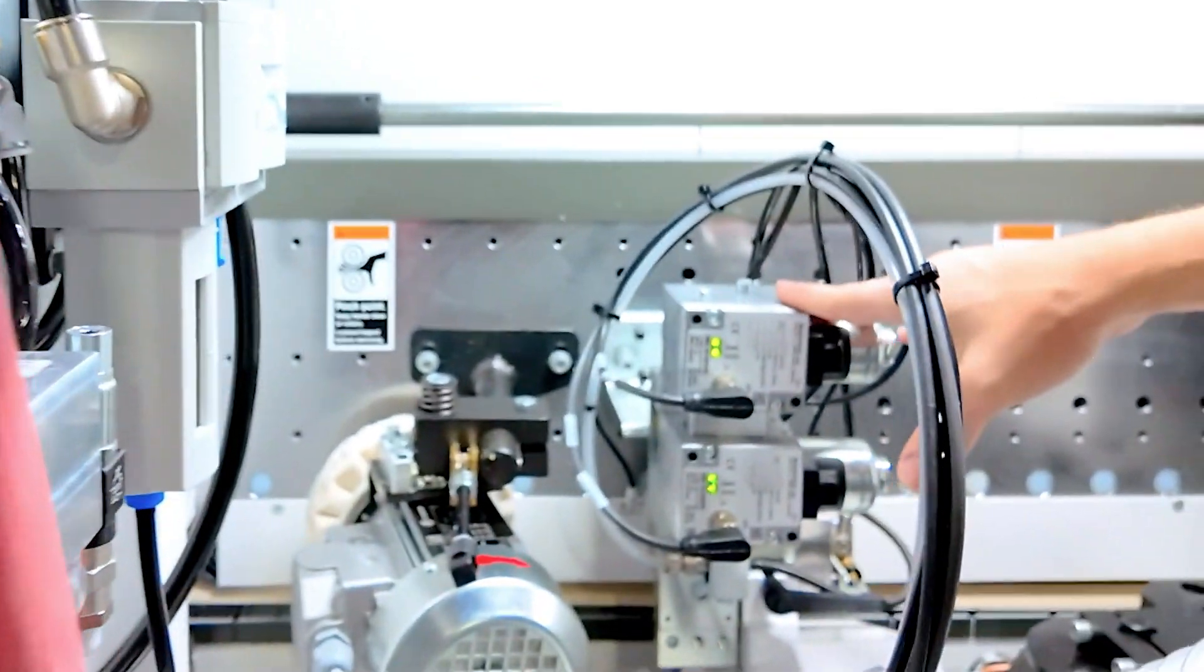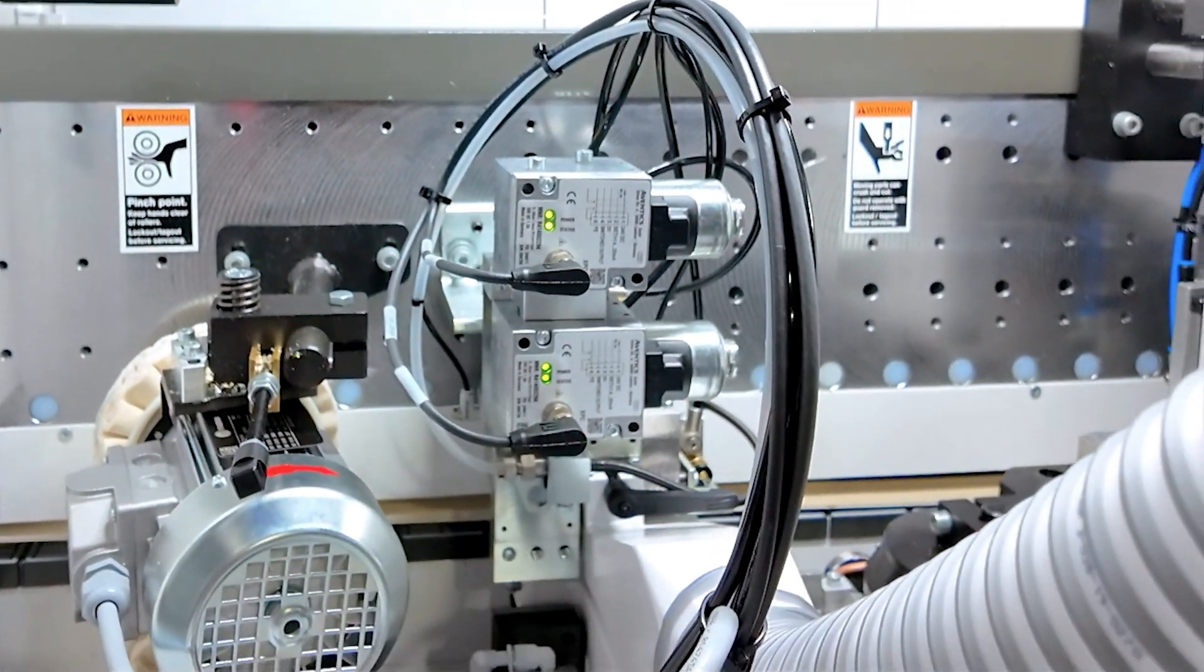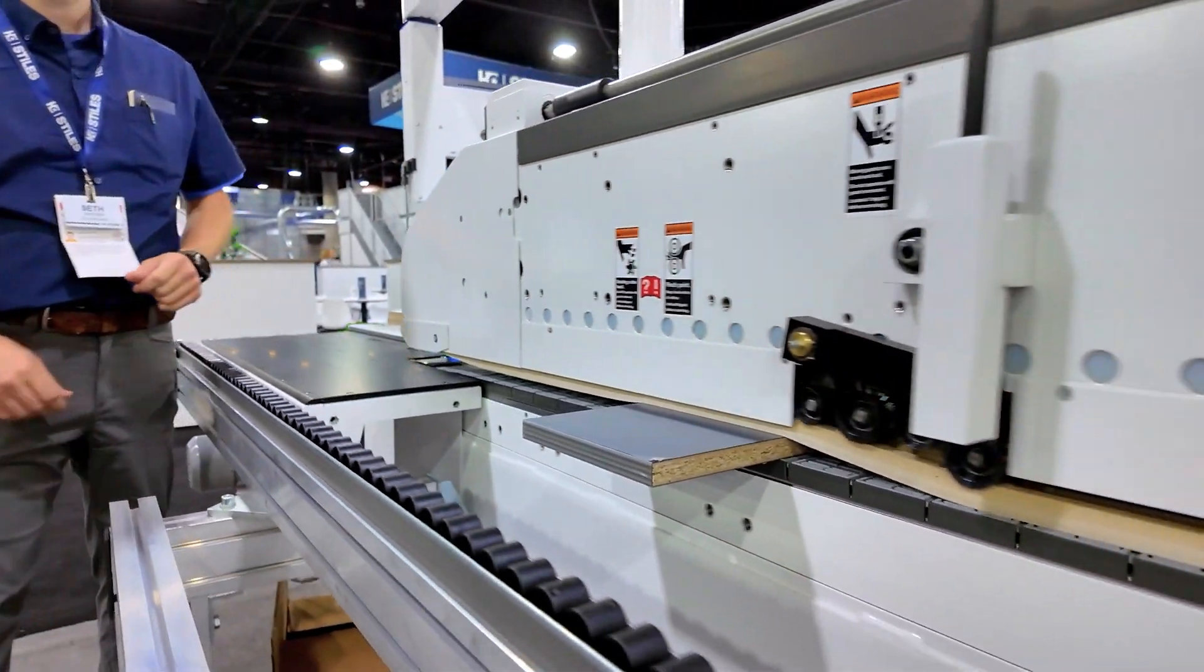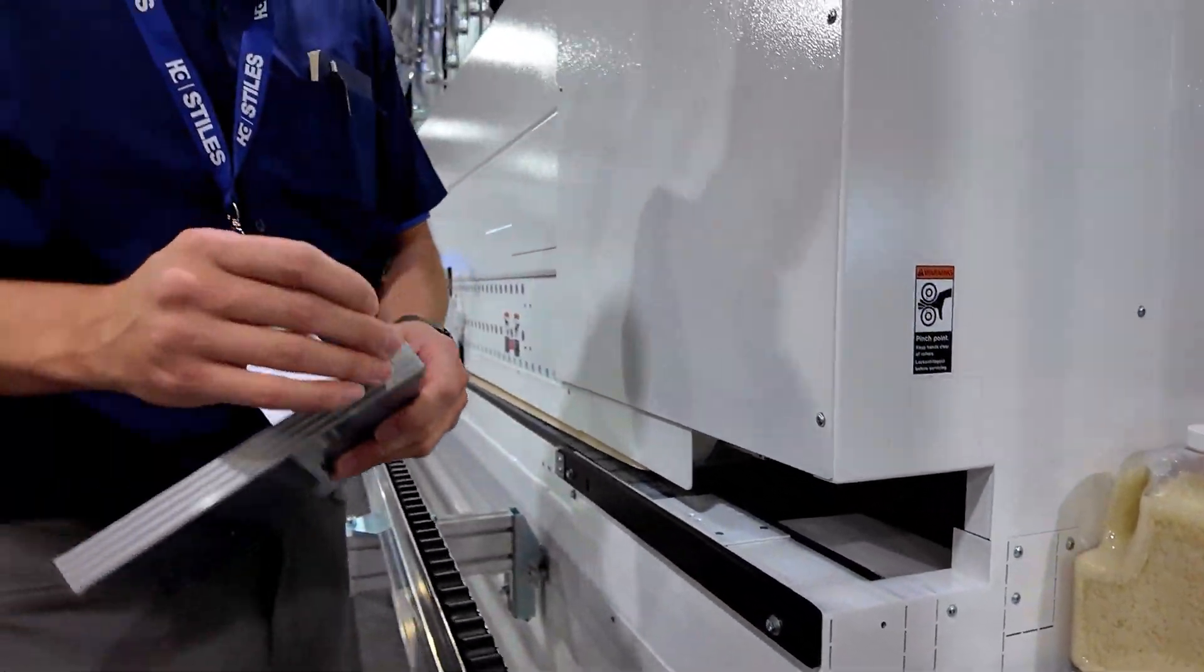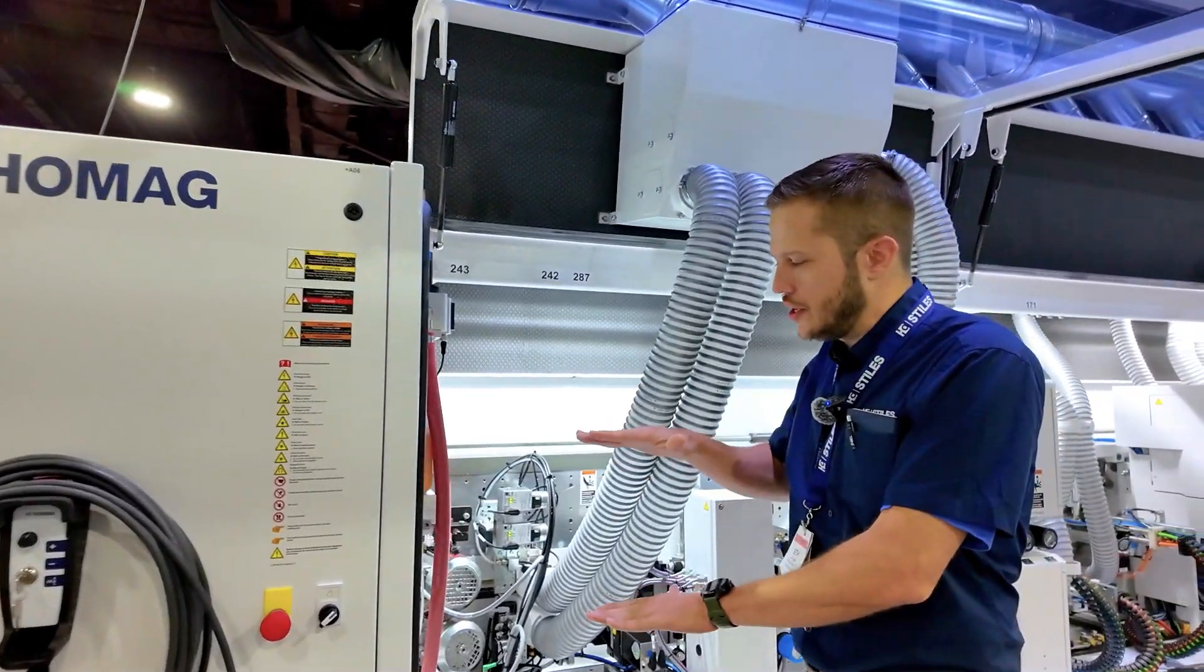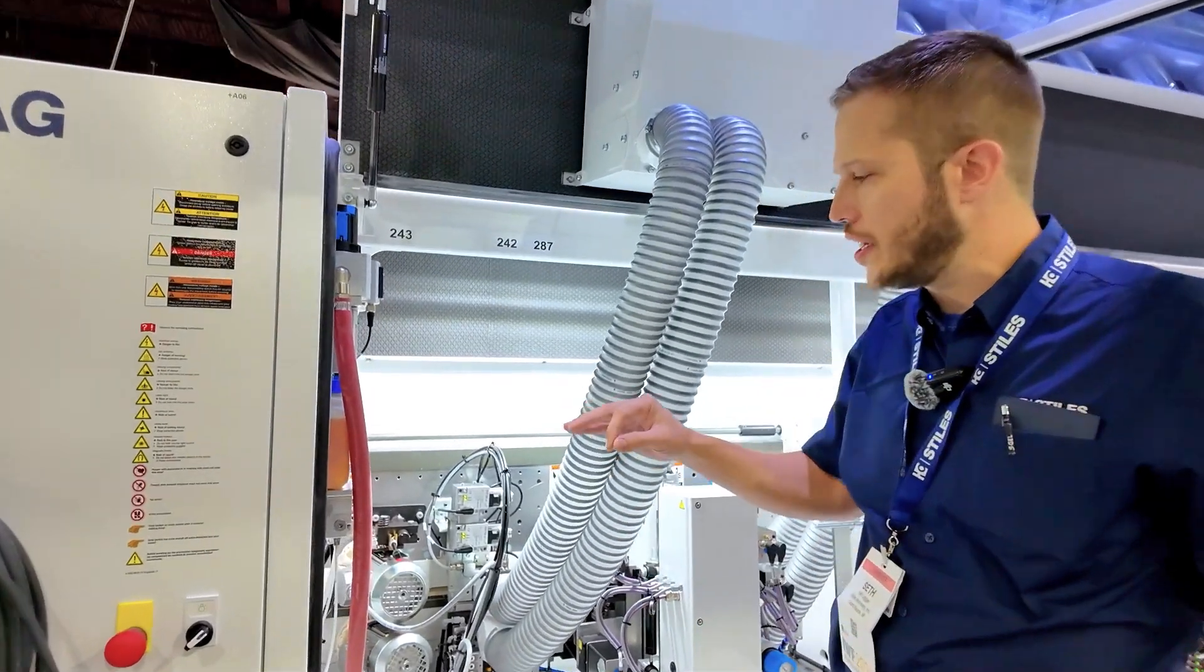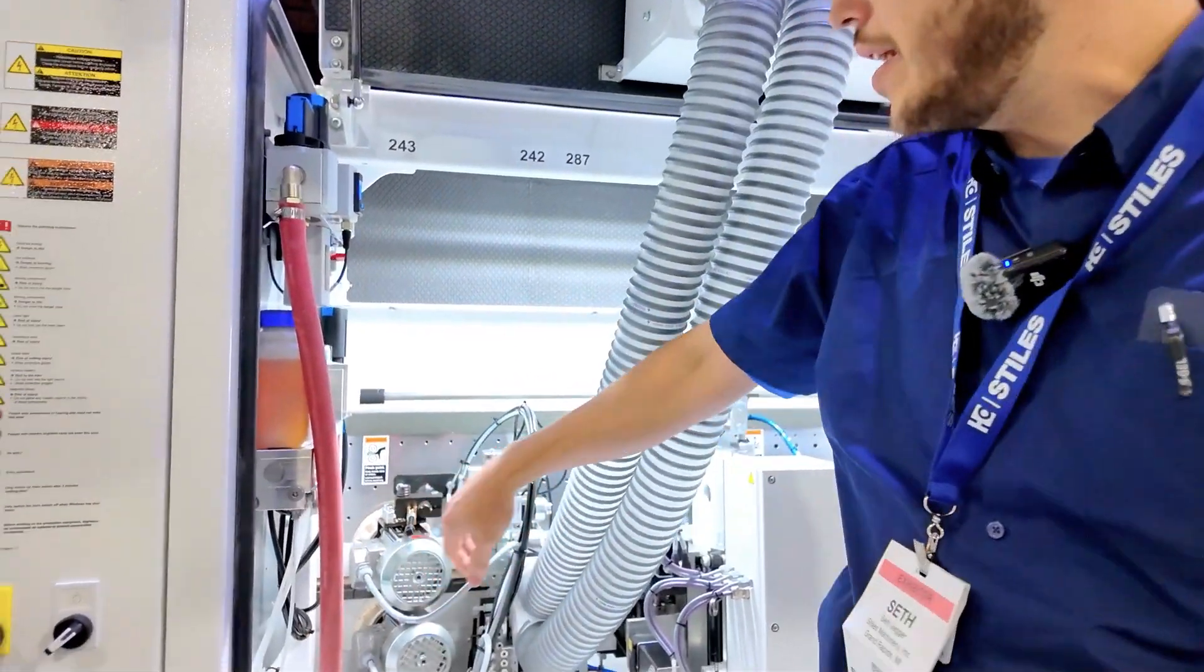Down here on the end, this is a servo glue joint scraper. So if I'm switching from a flat melamine surface to a textured board, this makes it really easy with a switch of a program. I can take this station and account for any texturing in the board, making sure that I don't bite into the panel.